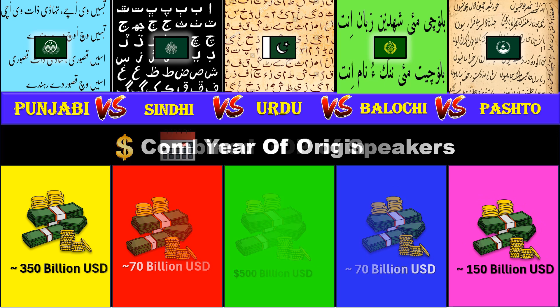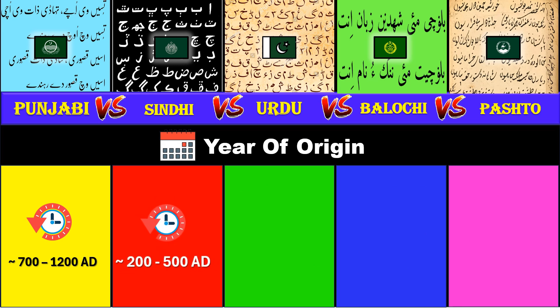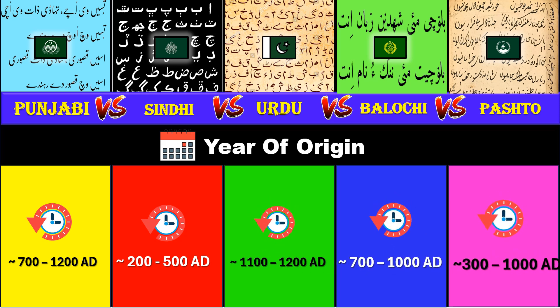Year of origin. Punjabi: between 700 and 1200 AD. Sindhi: between 200 and 500 AD. Urdu: between 1100 and 1200 AD. Balochi: between 700 and 1000 AD. Pashto: between 300 and 1000 AD.